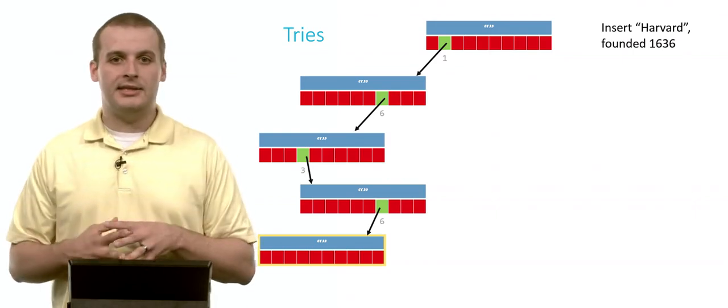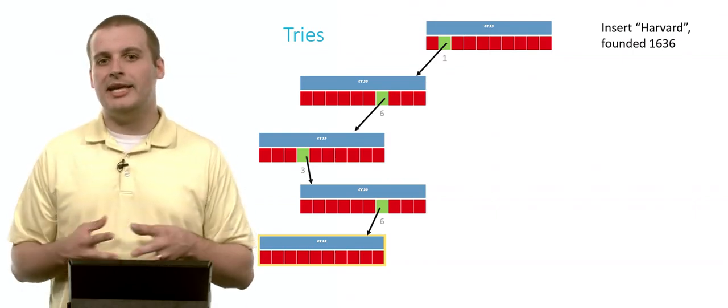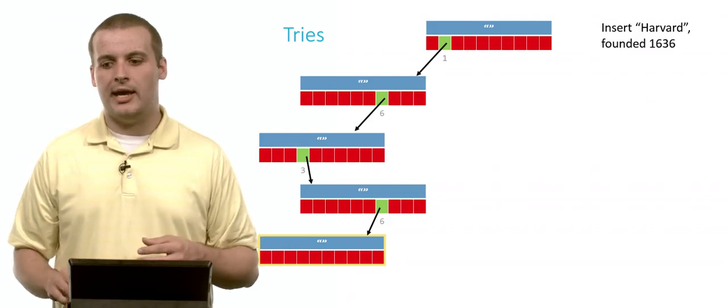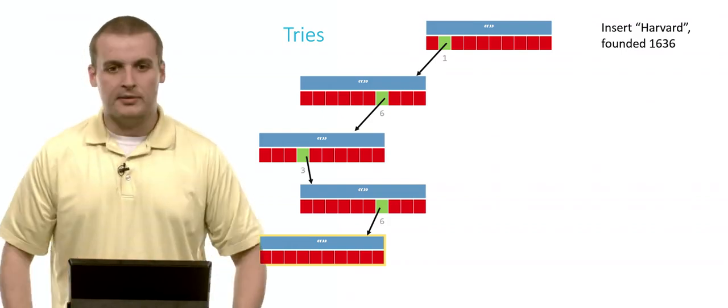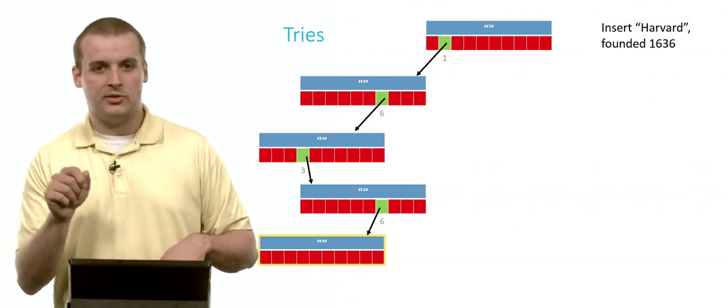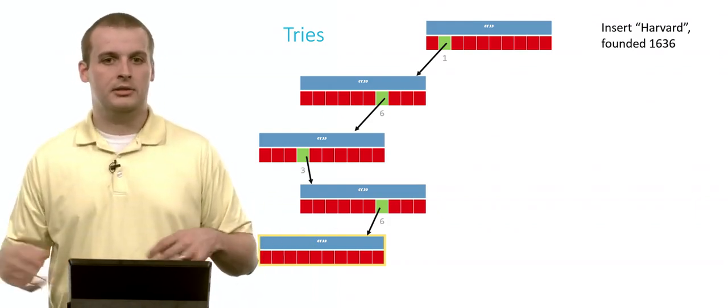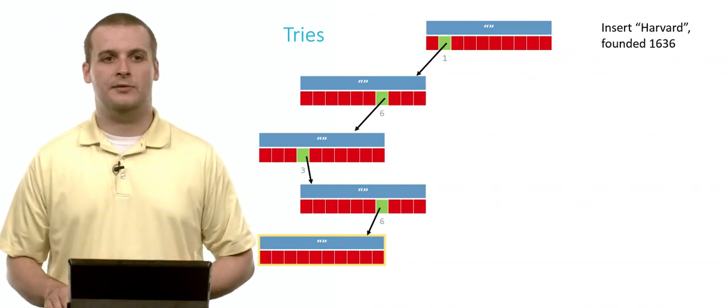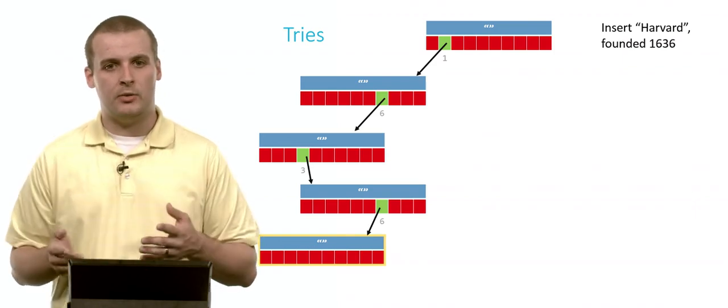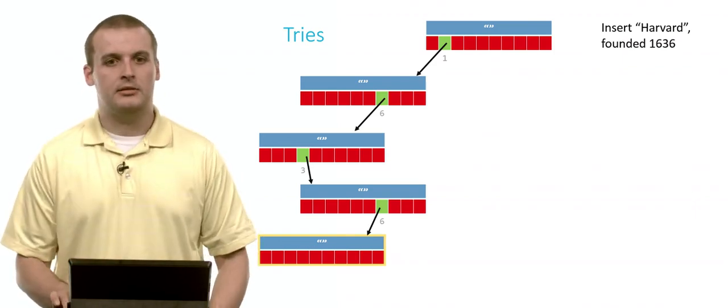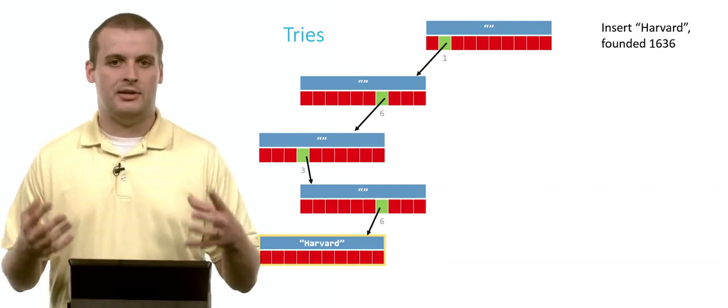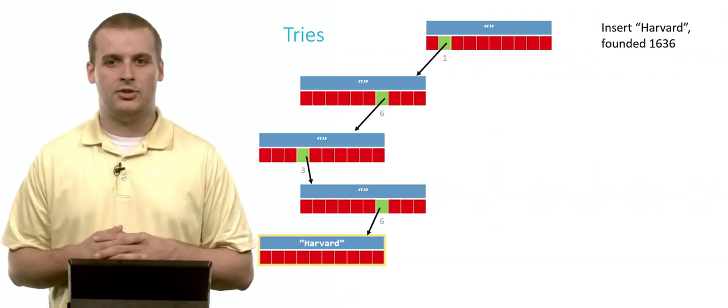So now I've used my key to create nodes and start to build this trie. I've started at the root. I've gone down one, six, three, six. My key is done. I've exhausted every position in my key, so I can't go any further. So at this point, all I really need to do is sort of like spray painting Harvard on the ground. That's the name of this node. If we start at the root and we go down one, and then six, and then three, and then six, we know that Harvard was founded in 1636 based on the way we're implementing this data structure.